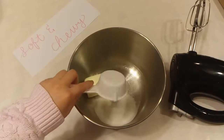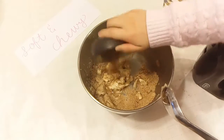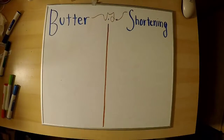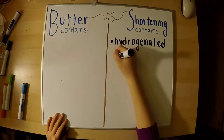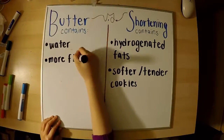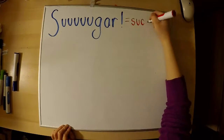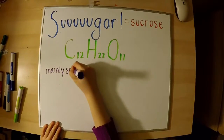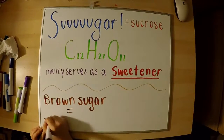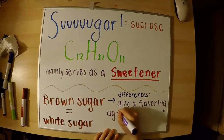Next, we're going to cream together one stick of butter along with a quarter cup of granulated sugar and half a cup of brown sugar. I melted my butter because it wasn't working for me. Shortening contains hydrogenated fats, which are trans fats, and they result in softer and more tender cookies, while butter contains water and has more flavor but results in chewier cookies. Sugar, or sucrose, mainly serves as a sweetener. Brown sugar is the same as white sugar — the only difference is color, flavor, and moisture content, because brown sugar contains molasses.